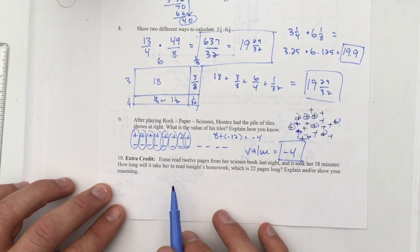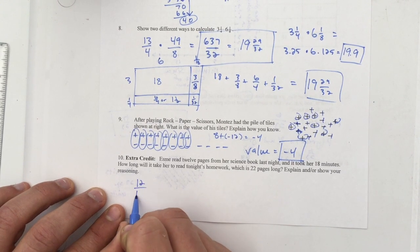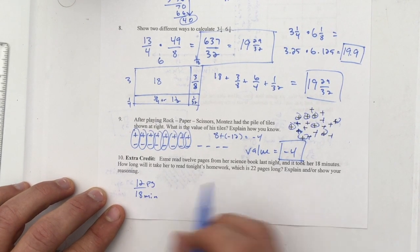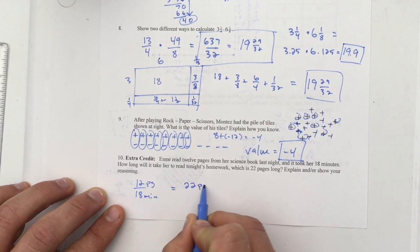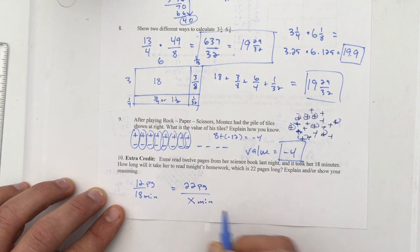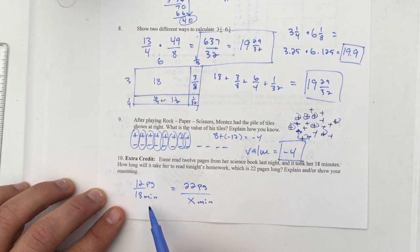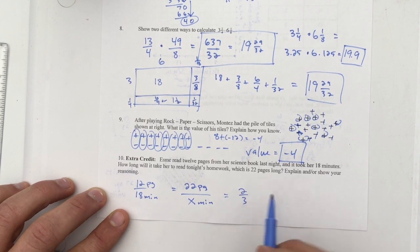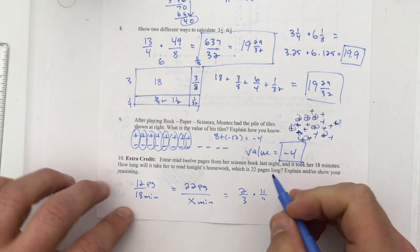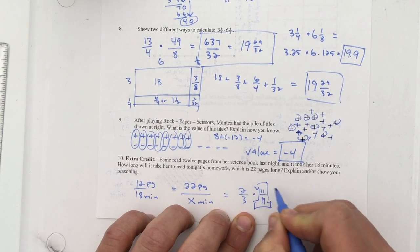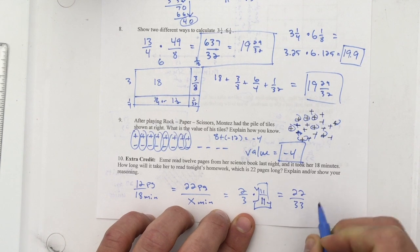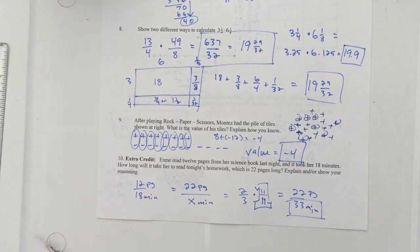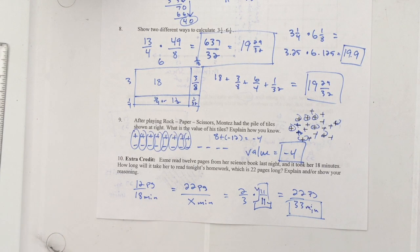The extra credit. Estime read twelve pages from her science book last night and it took her eighteen minutes. So we'd set that up as twelve pages, eighteen minutes. How long will it take her to read tonight's homework which is twenty-two pages long? So we're going to set up equivalent ratios: twenty-two pages to some number of minutes. 12/18 is the same as 2/3. So this all should equal 2/3. So using a giant one of 11/11, I'll get 22/33. So twenty-two pages in thirty-three minutes. So thirty-three minutes is my answer. Again, this is extra credit. We'll get into a lot more of those in later chapters.